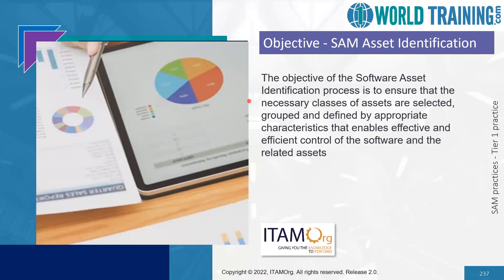Software characteristics that could influence license consumption include all installed software, software versions, patches and updates, and licenses. Also, it can include proof of license documentation such as purchase orders, invoices, original packaging, original documentation, etc. Licensing models, master versions and distribution copies of the software, and metadata regarding the software as required by ISO 19770-1 — like unique identifiers, name and description of the software, location, owner, and whether it is used in a development, test, or production environment.